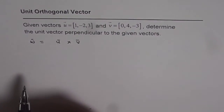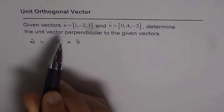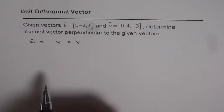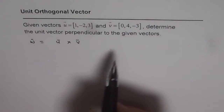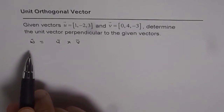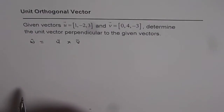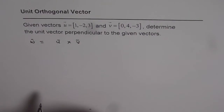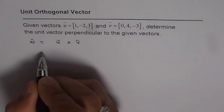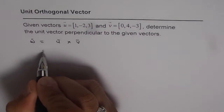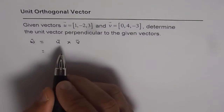Let us first find the vector which is perpendicular to both u and v, and then we will find its magnitude. Dividing by the magnitude of this vector will give us the unit vector which is perpendicular to both. These are the steps to be followed. So let us first find the cross product between u and v.